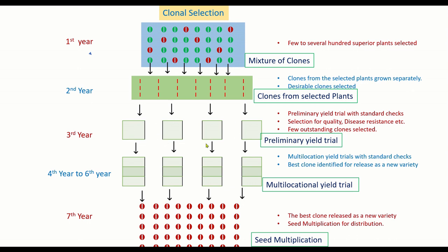Once superior lines are selected from preliminary yield trials, they are transferred to multi-locational yield trials conducted at AICRP research stations or in research fields or farmers' fields where varieties are to be released. From multi-locational trials, best clones are identified using standard checks for each particular locality. Different checks should be used for different localities.